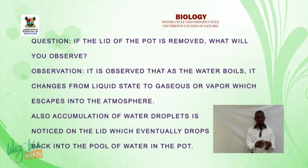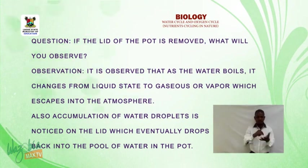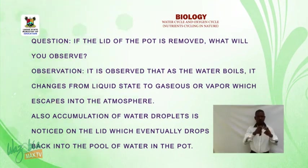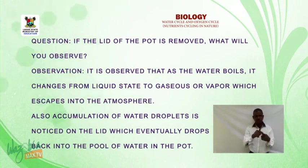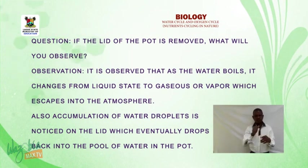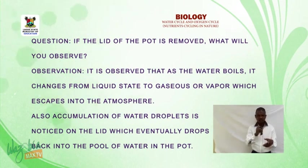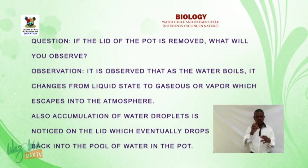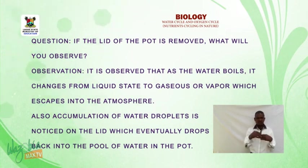Question: if the lid of the pot is removed, what will you observe? Observation: as the water boils, it changes from liquid state to gaseous or vapor, which escapes into the atmosphere. Also, accumulation of water droplets is noticed on the lid, which eventually drips back into the pool of water in the pot.